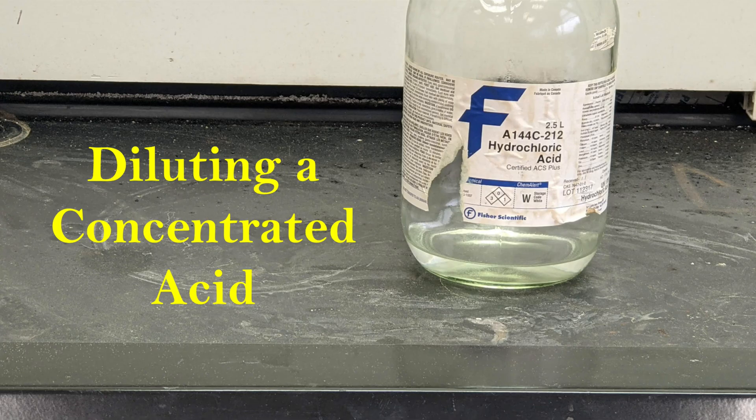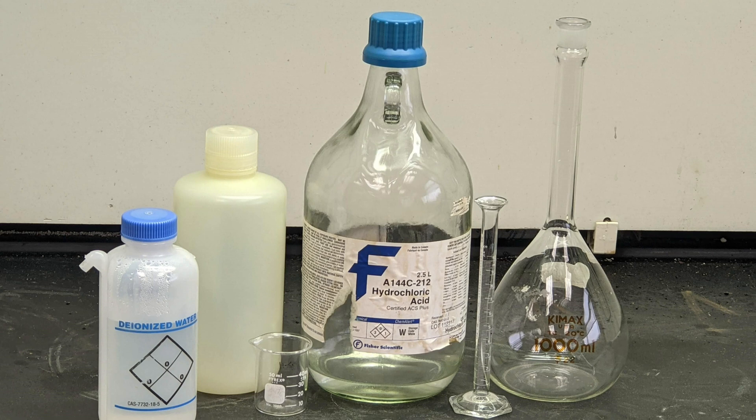In this video we'll be looking at how to dilute a concentrated acid. The materials we'll need are deionized water, the acid, a volumetric flask, a graduated cylinder, a small beaker, and a Nalgene bottle to store it in.